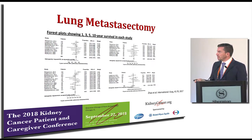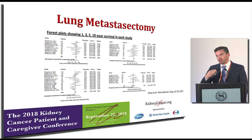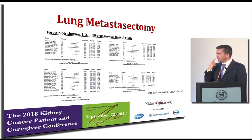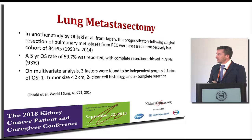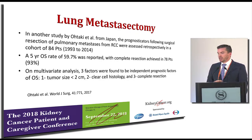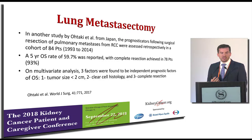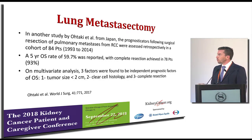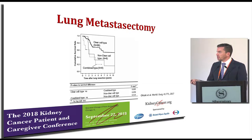The various factors associated with how patients do need to be taken into account individually. A study from Japan looked at surgical resection of pulmonary metastasis in about 85 patients. The five-year overall survival rate was about 59%, and complete resection was achieved in 93% of patients. Factors predicting outcomes were tumor size and histology — clear cell histology, in fact, was a very favorable prognostic factor for complete resection versus other types of kidney cancer histology.